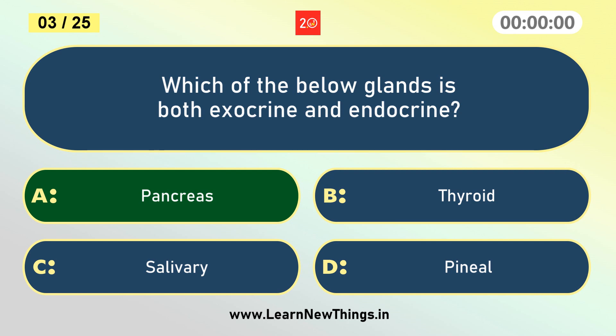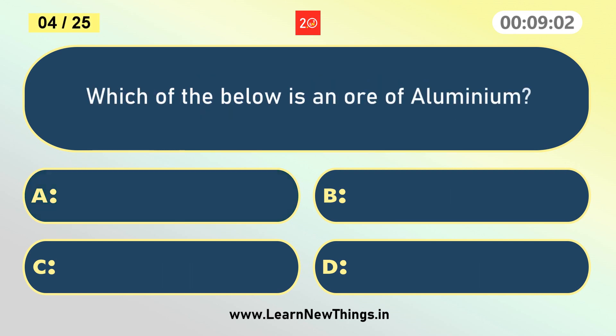Which of the below is an ore of aluminum? Bauxite.